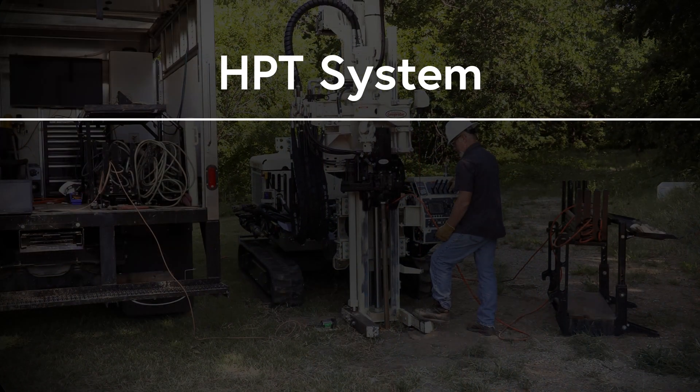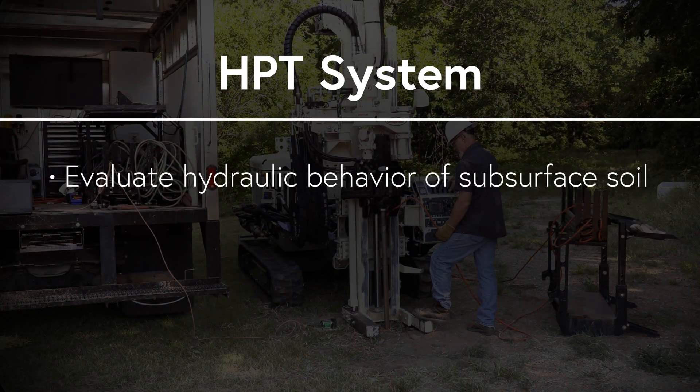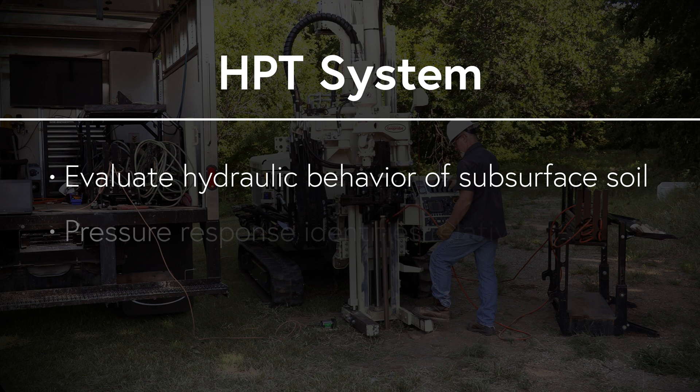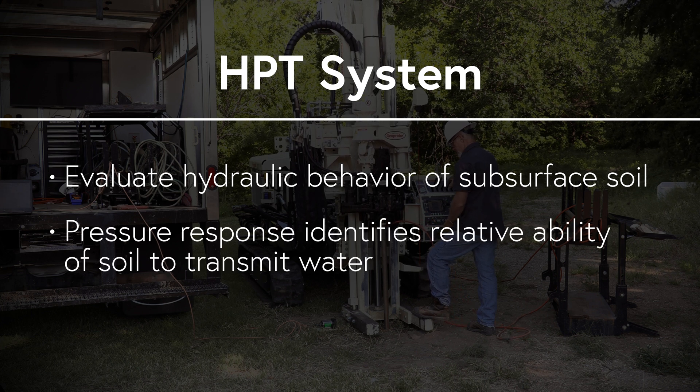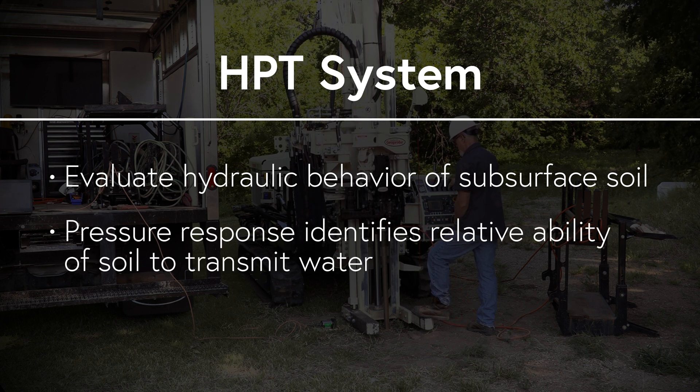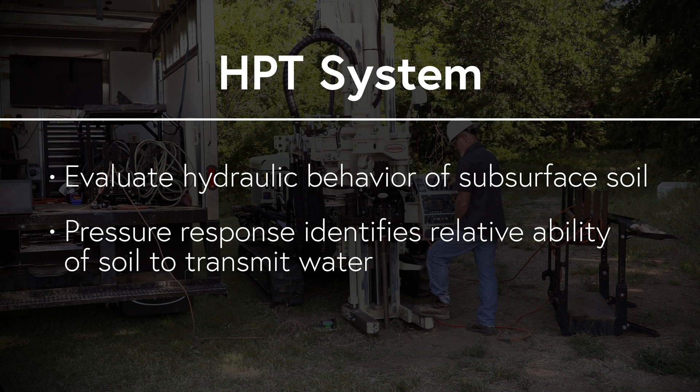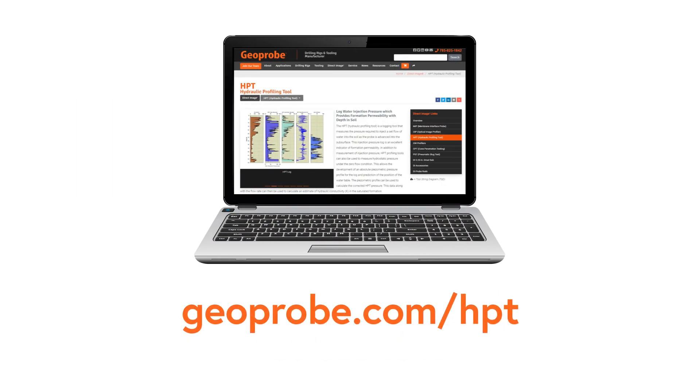The HPT system from Geoprobe is used to evaluate the hydraulic behavior of subsurface soil. The pressure response identifies the relative ability of the soil to transmit water. For more information, visit our HPT webpage at geoprobe.com/HPT or call us at 785-825-1842.